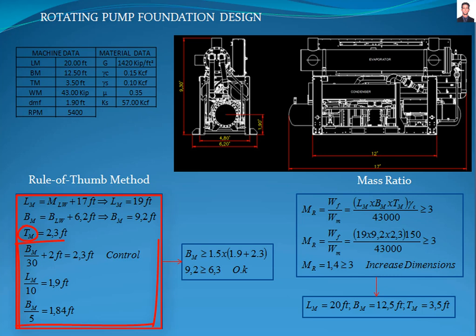Now we need to verify that the width of the foundation is greater than 1.5 times the vertical distance from the base of the foundation to the center line of the equipment. The criteria passed. The final preliminary dimensions are 19 feet by 9.2 feet by 2.3 feet.